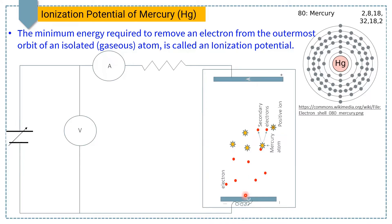In the beginning, when there is a small potential difference between the cathode and anode, we get a small current, because very few electrons reach the anode plate. When we slowly increase the potential, the current increases. When we increase the potential beyond the critical value, all electrons in the tube are attracted towards the anode plate.